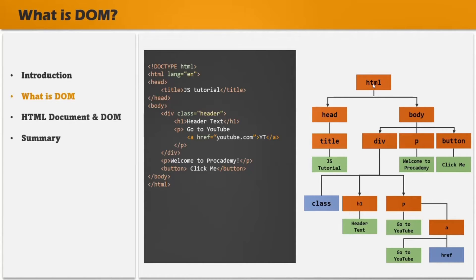The nodes at the bottom are called leaf nodes. In this example, 'JS tutorial' is a leaf node. The href node and other text nodes shown in green and blue are also leaf nodes. A leaf node usually represents either an attribute of that element in the HTML or it represents the text content of that element. So here 'JS tutorial' is the text content of the title element, so it is a leaf node. In the same way, 'go to YouTube' is the text content of the anchor element, so it is a leaf node. And also, this href is the attribute of this anchor element, so href is also a leaf node. Mostly the leaf nodes are either the text content of the HTML element or the attribute of that HTML element.